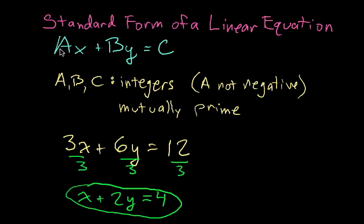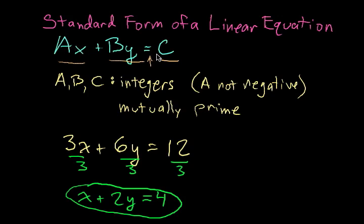So again, standard form is Ax plus By equals C. One thing I tell my students is that we have a very specific order: we have the x term, the y term, an equal sign, and then a constant term. So as long as there are integers — meaning no fractions or decimals — and we cannot divide anything out of all of them, and we don't start with a minus sign, then we're in standard form.